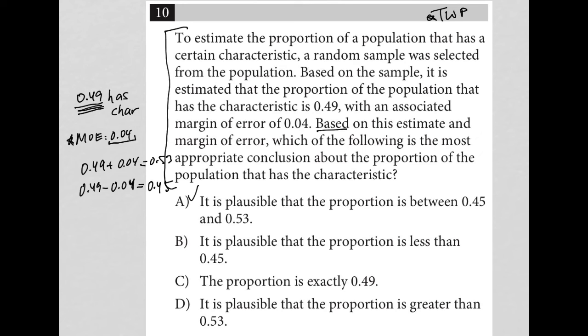Choice B, it is plausible that the proportion is less than 0.45. No, that's not what the margin of error is telling us. Choice C, the proportion is exactly 0.49. Nope, because we have a margin of error here. And choice D, it is plausible that the proportion is greater than 0.53. Absolutely not.